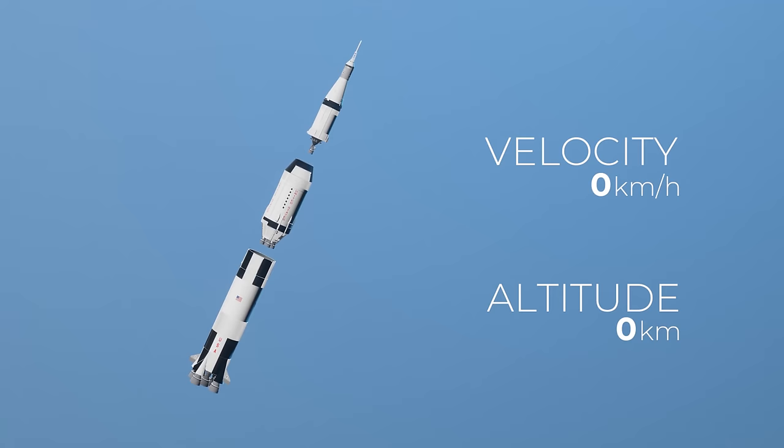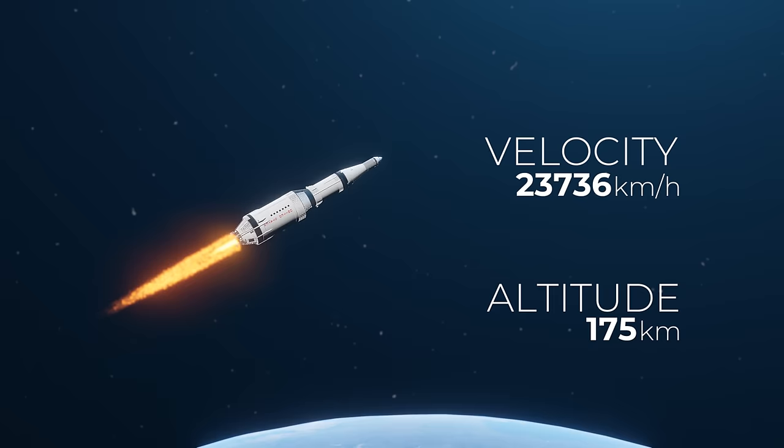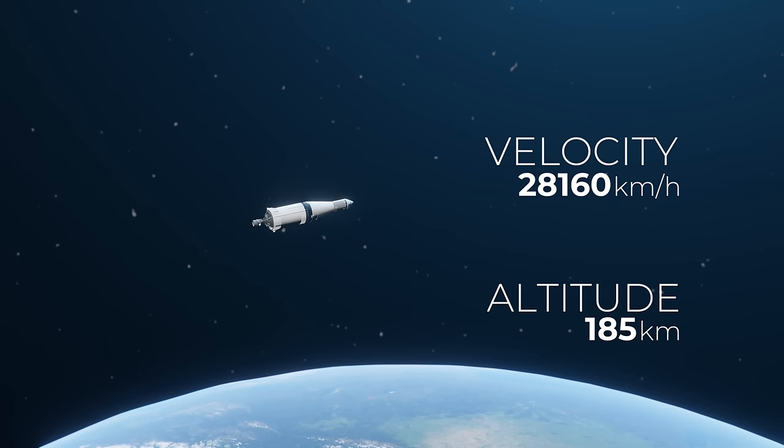The Saturn V rocket had three stages. The first stage burned for about two and a half minutes and got them to an altitude of 61 kilometers. From there, the second stage would burn for around six minutes, taking them higher and faster. It was then up to the third and final stage to do a short burn and get the spacecraft into orbit.